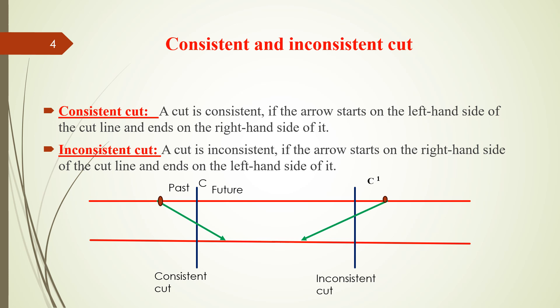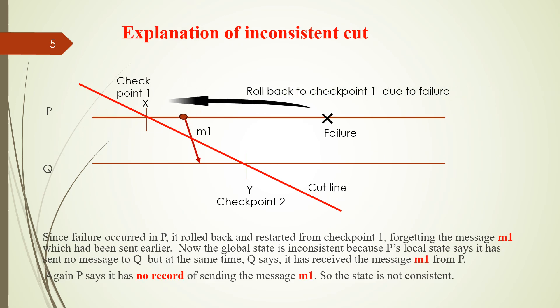Now come to the inconsistent cut. It is not possible to post a letter in the future and receive the same letter in the past. For example, you cannot post a letter tomorrow and receive the letter yesterday, right? That is not possible. That is inconsistent.